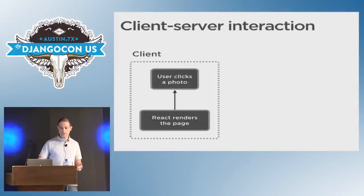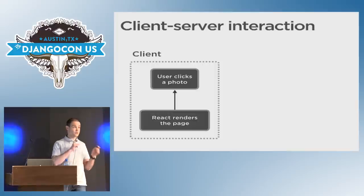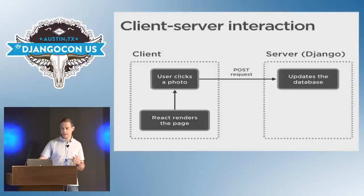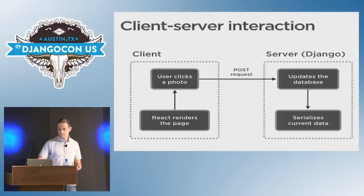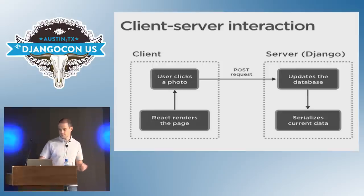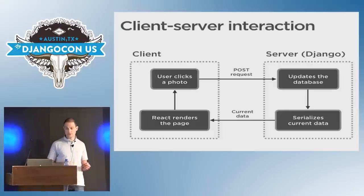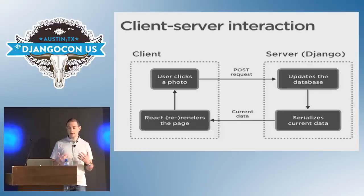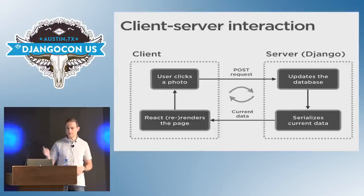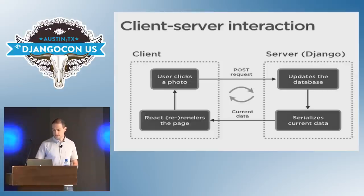React will be rendering the page, and then whenever the user clicks on photos, a POST request will be emitted to the server, to the API. Django will update the database. We then serialize the current state of the data and pass it back to the client. React will then be able to re-render the page to reflect the changes that have been made, following this unidirectional flow of data.